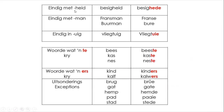Woorde wat eindig met HEID - soos 'besigheid' - word 'besighede'. As iets eindig met MAN - soos 'Fransman' - word 'Franse'. Bierman - ons het baie biere. Iets wat eindig in TUIG - soos 'vliegtuig' of 'voertuig' - word 'tuie'.